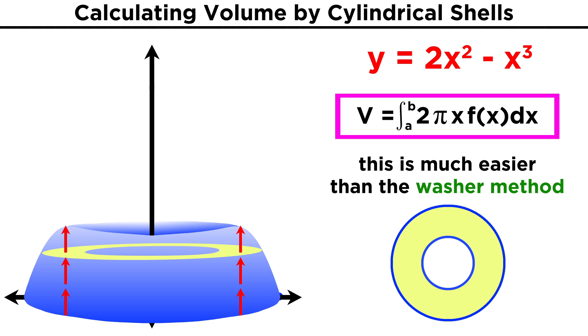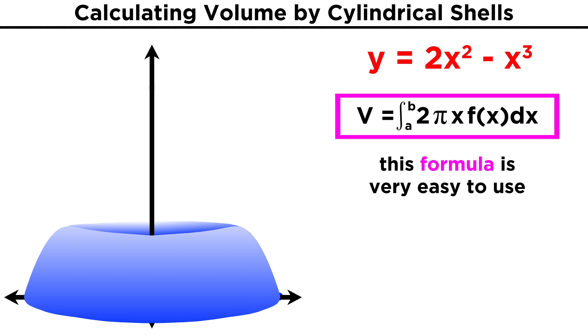So we can see that for this particular example, this method ended up being easier than the washer method we used in the previous tutorial, as our formula for the volume of the cylindrical shell was ready to go, which meant we didn't have to do much to set things up.